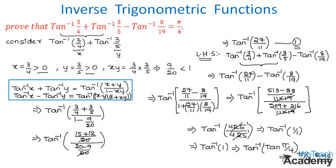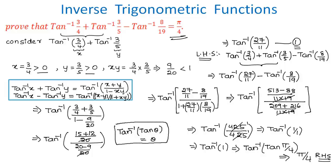Note the formulas used: tan inverse x plus tan inverse y equals tan inverse of (x + y)/(1 minus xy), and tan inverse x minus tan inverse y equals tan inverse of (x minus y)/(1 plus xy). We also used the property that tan inverse (tan θ) equals θ, which holds for all trigonometric ratios. This is how we solve examples under inverse trigonometric functions. Hope you understood the concept — for more videos visit our website We Teach Academy.